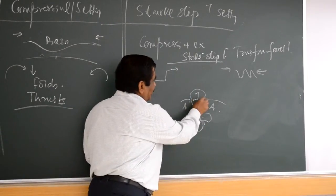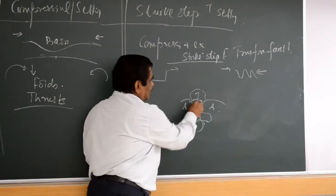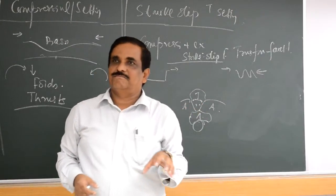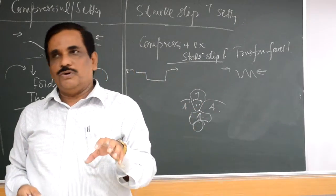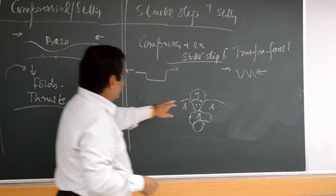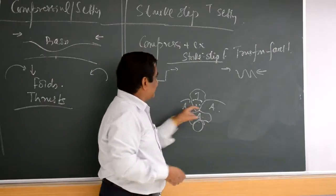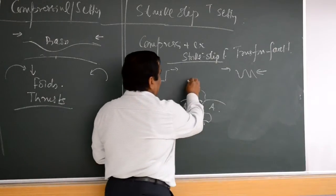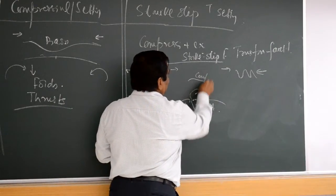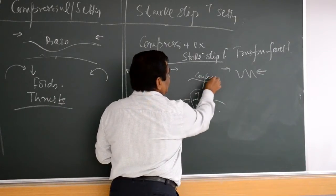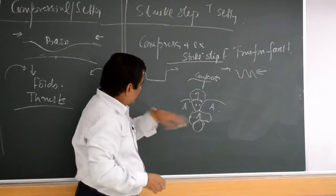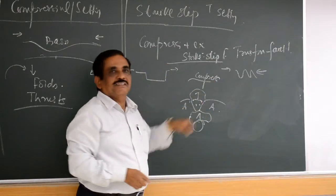Within this are your rift valleys - within this. Now when you are developing this, you are compressing here. This is the zone of compression. This is the zone of extension.